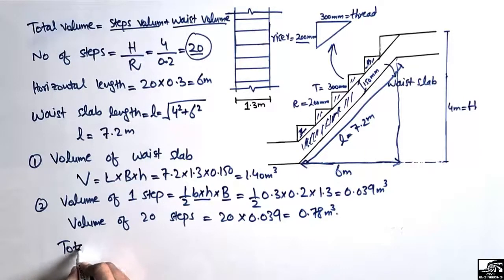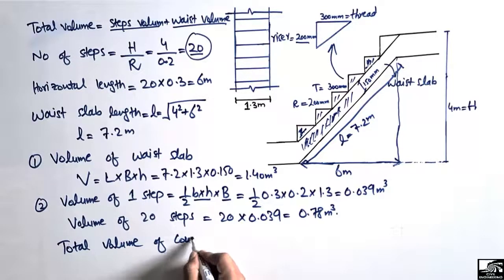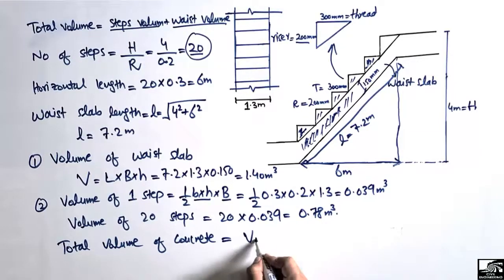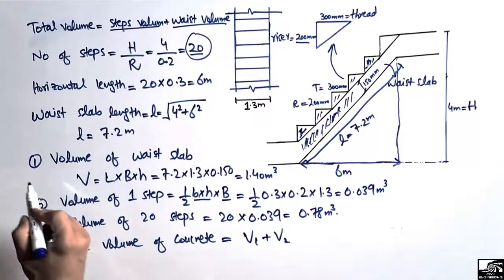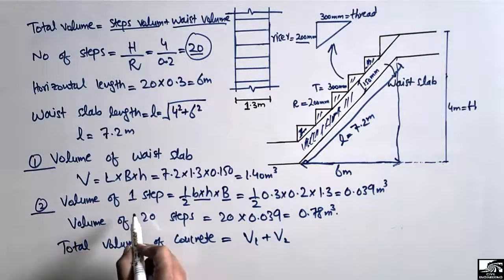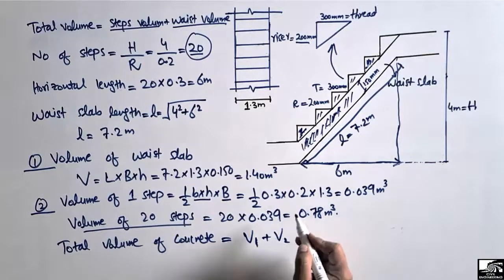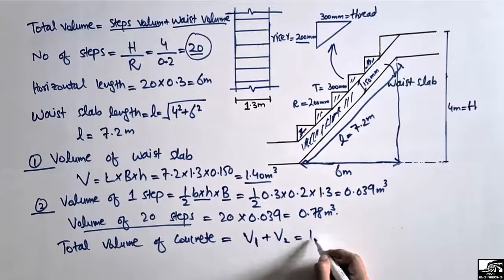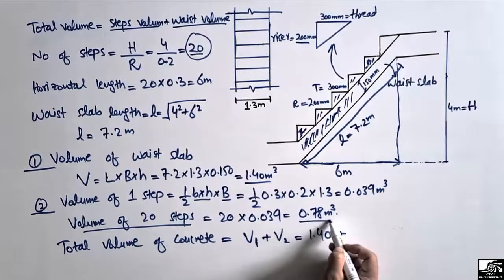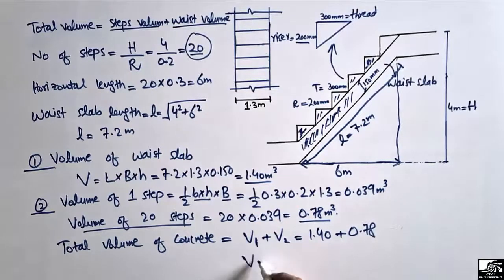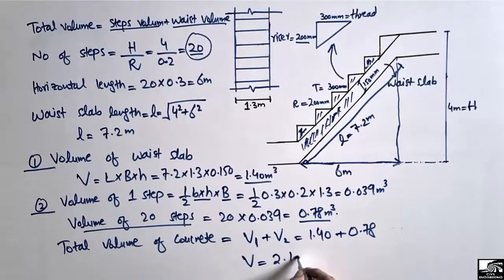The total volume of concrete in this staircase equals V1 plus V2, where V1 is the volume of the waist slab and V2 is the total volume of the 20 steps. So 1.40 + 0.78 = 2.18 cubic meters. This is the total volume of concrete used in this staircase.